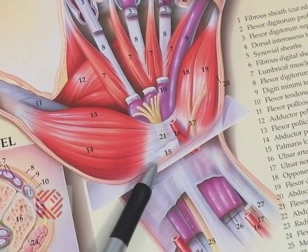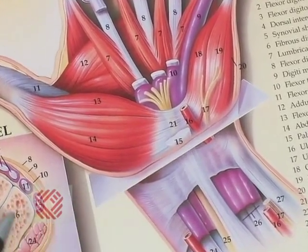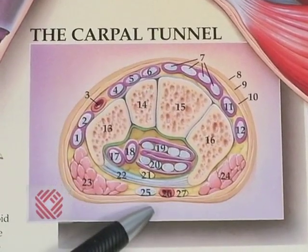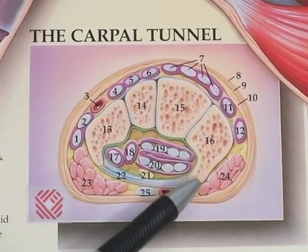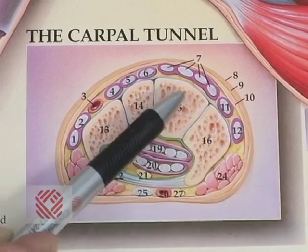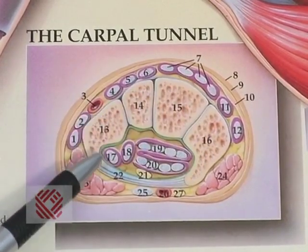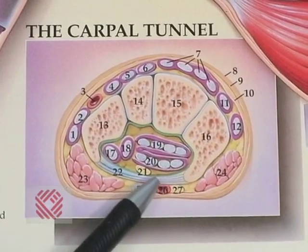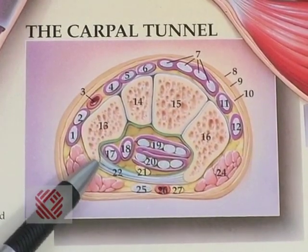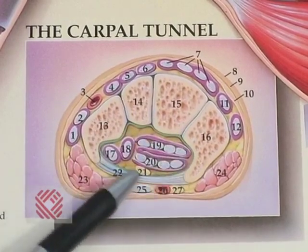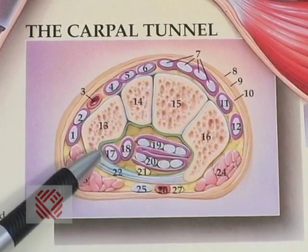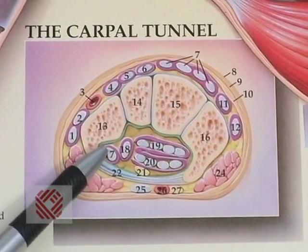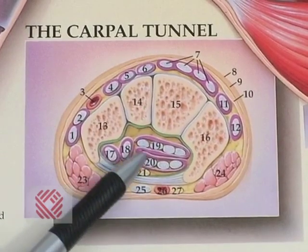We'll give you a better look at the carpal tunnel if we take a transverse section and look at it in a transverse cut. Here's the back of the hand, here's the palm of the hand — so the palm is facing down. Here are the carpal bones aligned in a row that form a C-shaped column, and that C-shaped column is bridged by the transverse carpal ligament. That forms a ring, or tunnel, or canal known as the carpal tunnel or carpal canal. There are nine tendons that pass through there along with the median nerve.